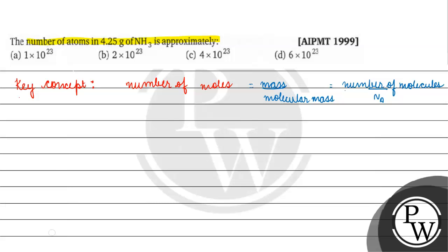The mass given is 4.25 grams. The molecular mass of ammonia — what will it be? 14 plus 3 × 1, that means 17 grams per mole. So we set up: 4.25/17 equals number of molecules of ammonia divided by Avogadro's number.